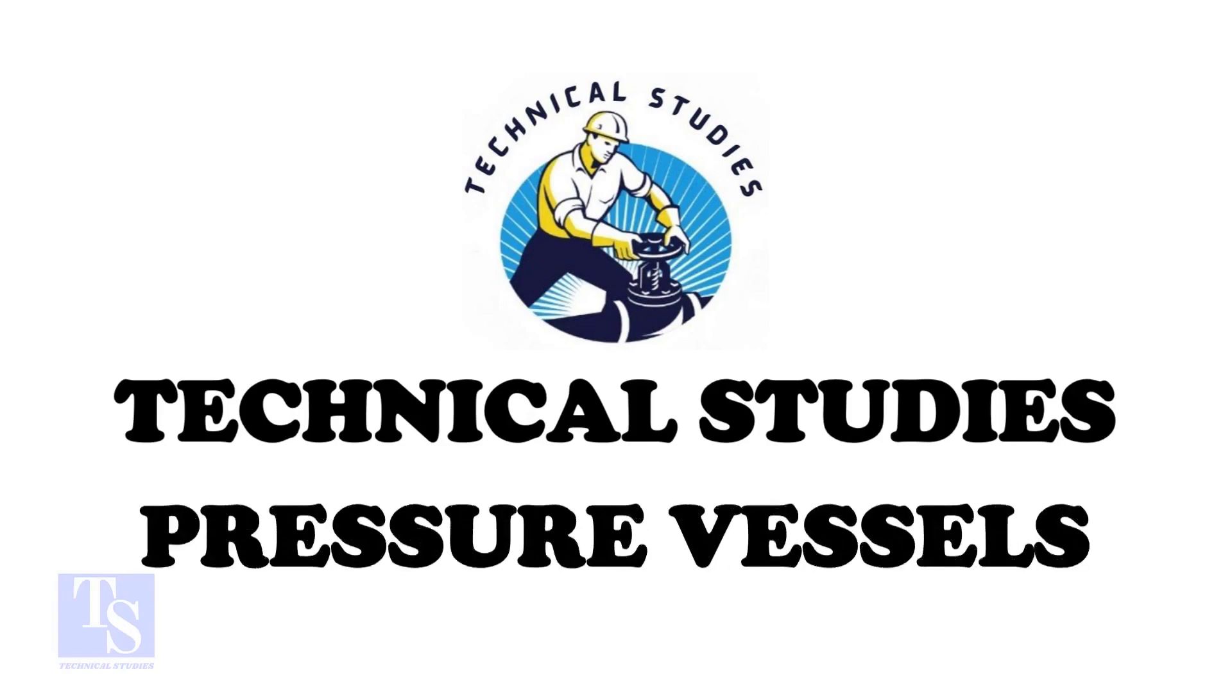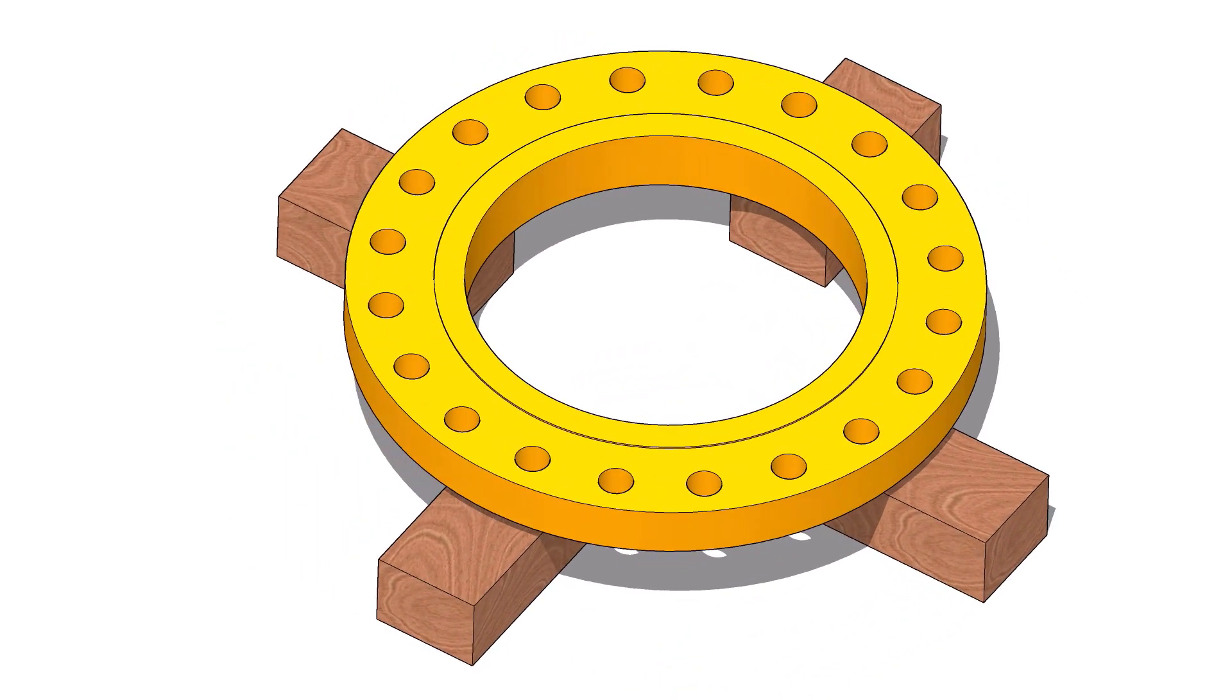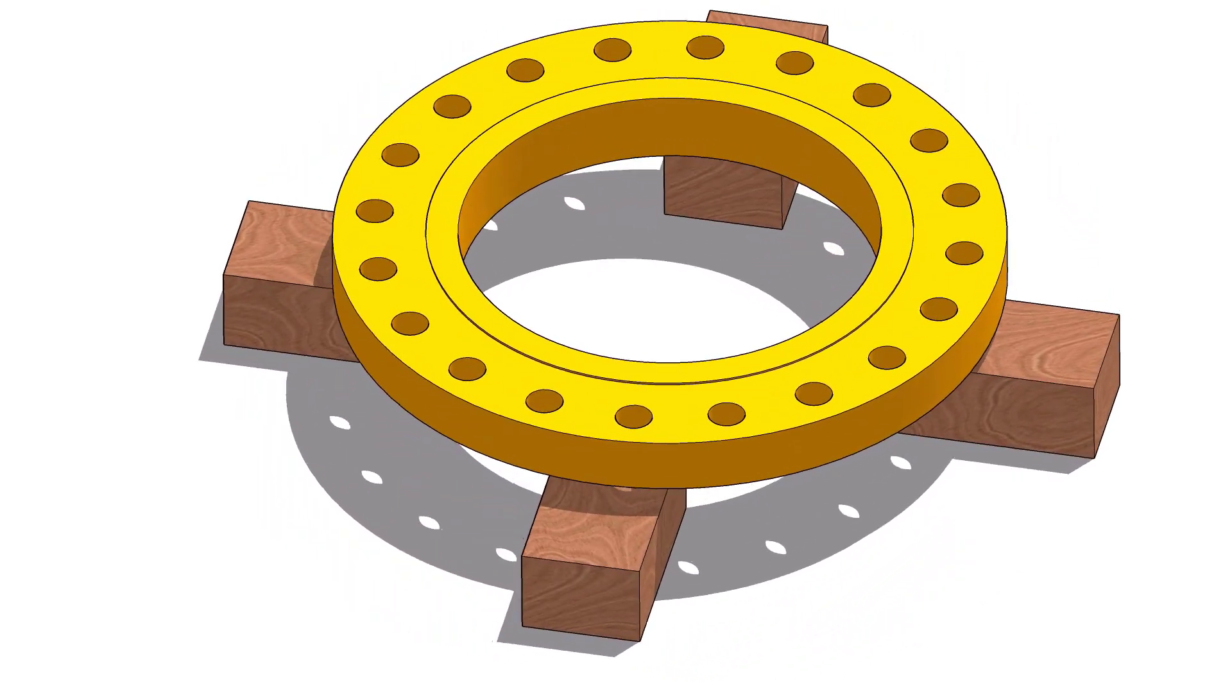how to fit up a flange to a fixed pipe in any degree. I choose a slip-on flange for the example, but the calculation and the procedure are same for all flanges.